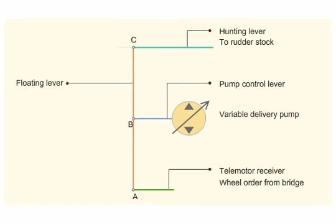The hunting gear mechanism in the steering gear system is a feedback mechanism which transmits the position of the rudder to the pump control lever through the floating lever. One end of the floating lever is connected to the hunting lever and the other end is connected to the telemotor receiver.